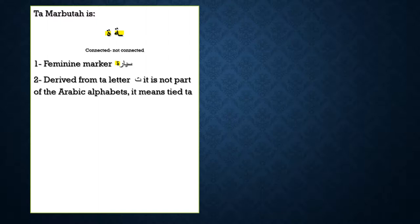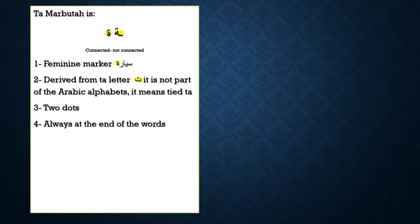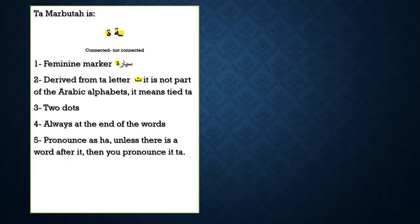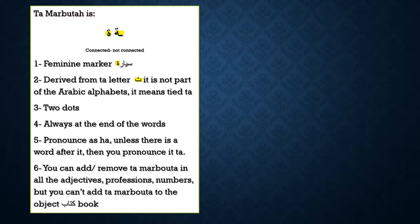Ta marbuta is derived from the letter ta, so ta marbuta is not seen separately as part of the 28 alphabet because it was already the letter ta. It means ta marbuta means 'tied' — this letter was ta, and we tied this letter to make it a feminine marker. We have two dots for ta marbuta. It's always at the end of words and we pronounce it as 'ha' as long as we have one noun. When I say 'sayyara,' you pronounce it with a ha sound at the end.